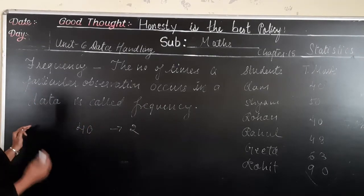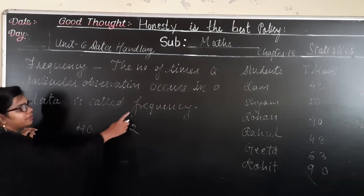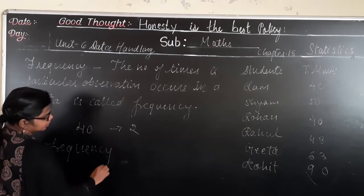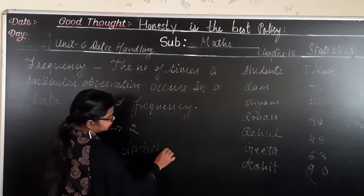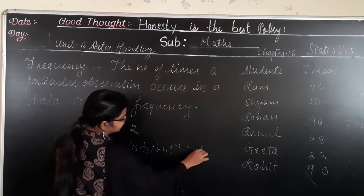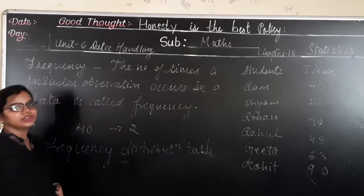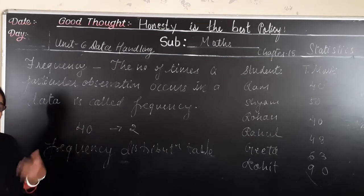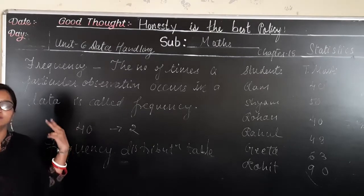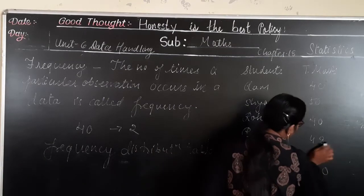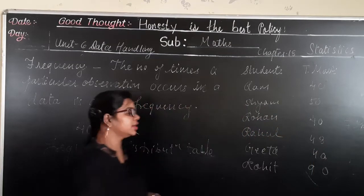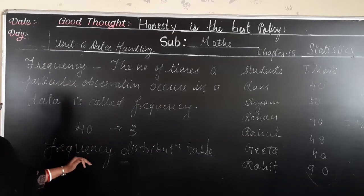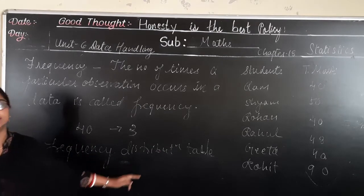When you prepare a table of this frequency, that table is known as a frequency distribution table. While solving the example I will explain what a frequency distribution table is. For now, just remember: frequency is the number of times a particular observation occurs. So if 40 also appears a third time, the frequency of 40 will become 3. The table prepared using these frequencies is called a frequency distribution table.